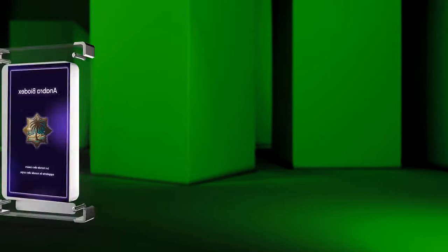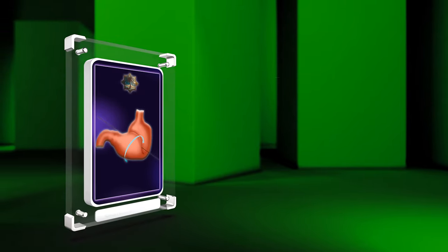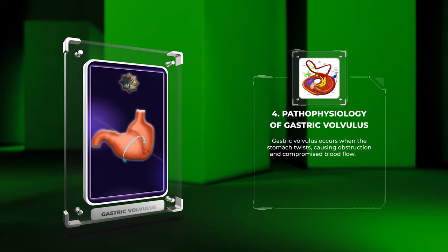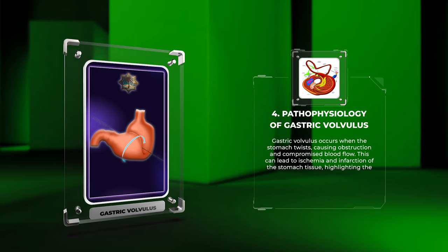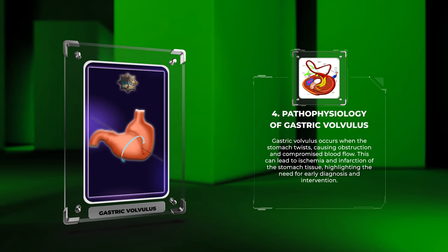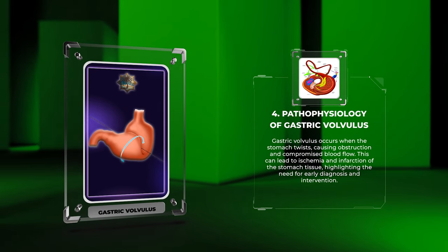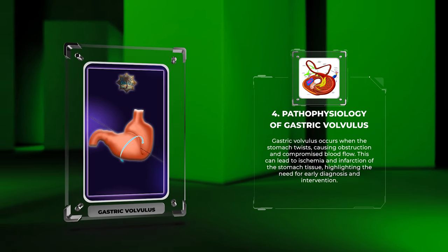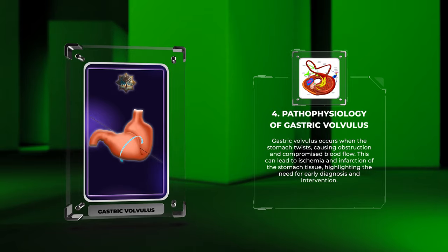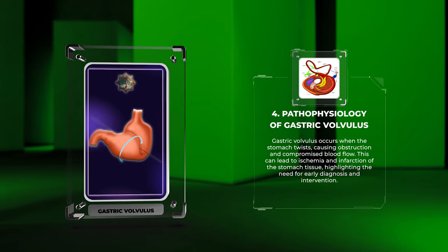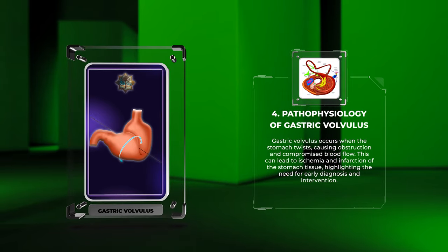Gastric volvulus occurs when the stomach twists, causing obstruction and compromised blood flow. This can lead to ischemia and infarction of the stomach tissue, highlighting the need for early diagnosis and intervention.